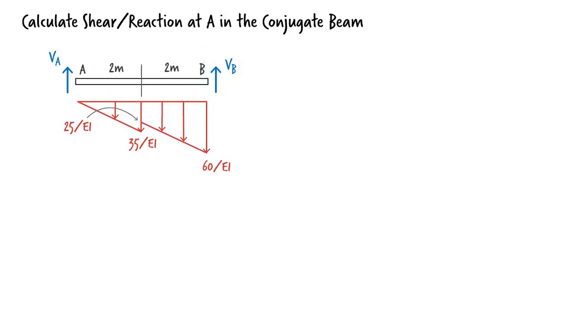Since B is hinged, bending moment at that point is zero. Before we write the equilibrium equations, let's divide the distributed load into triangular and rectangular loads.